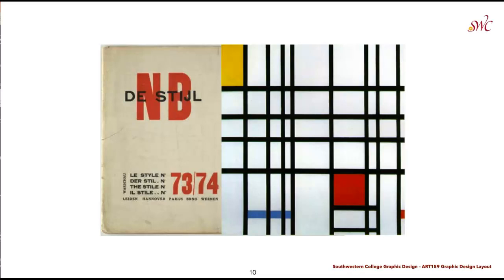While Swiss typographers were establishing the centrality of the grid in print design, similar movements occurred in fine art. The grid is most evident in the Dutch De Stijl movement, founded in 1917 and headed by artists Theo van Doesburg and Piet Mondrian. Believing in the democratic and utopian potential of modular design and absolute simplicity, they limited their canvases to intersecting vertical and horizontal lines and primary colors — clearly apparent in both the De Stijl publication and Mondrian's paintings.